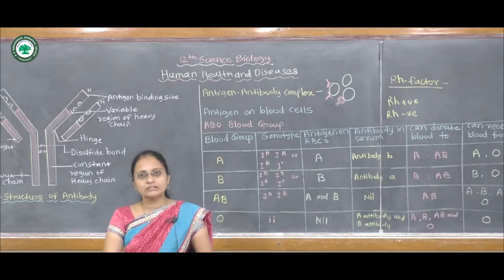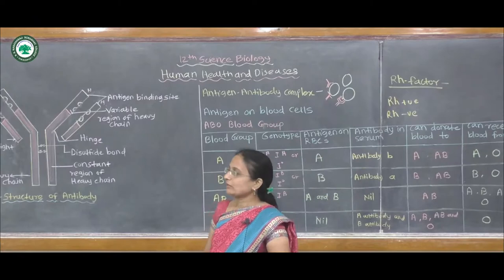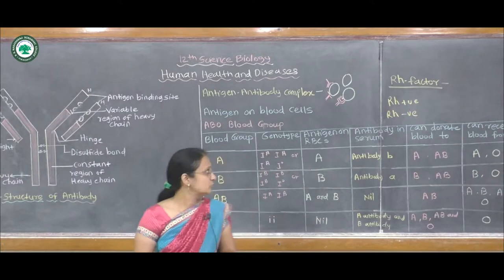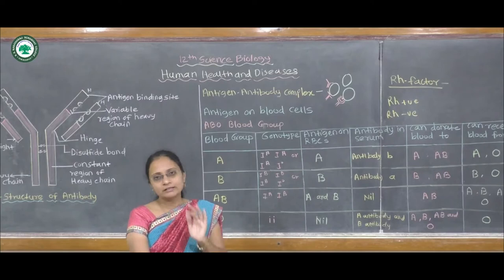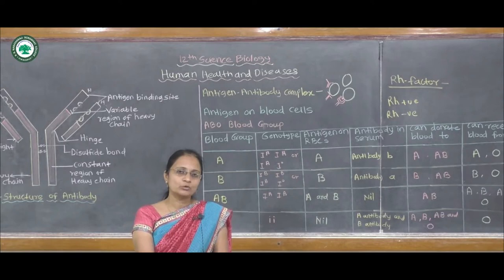In this way, we have seen the structure of the antibody, the parts present in that structure, how the antigen-antibody complex formation takes place, that each antigen has a specific antibody and these antibodies are produced in response to stimulation, and the ABO blood group system as well as the RH factor. Thank you.